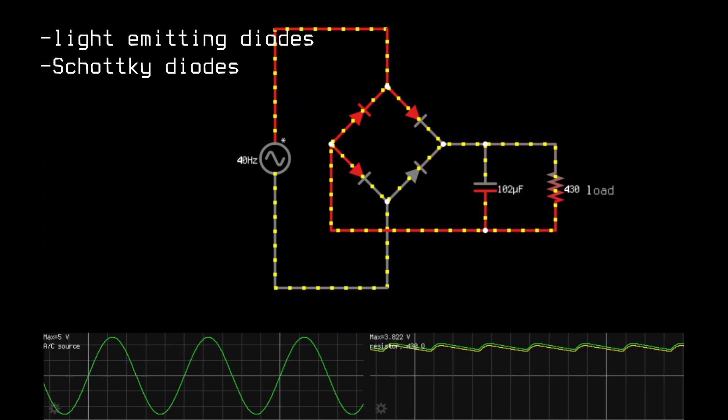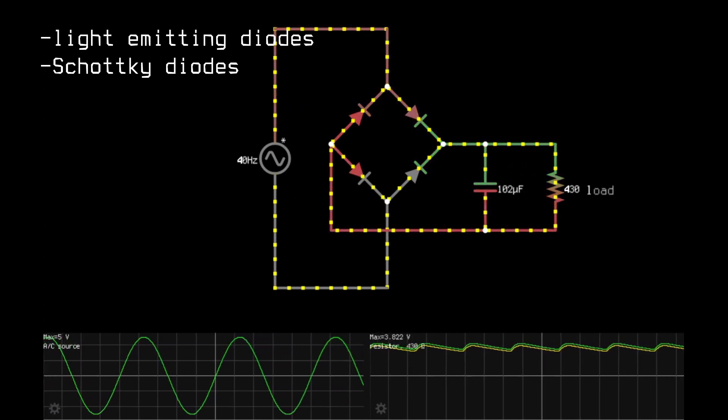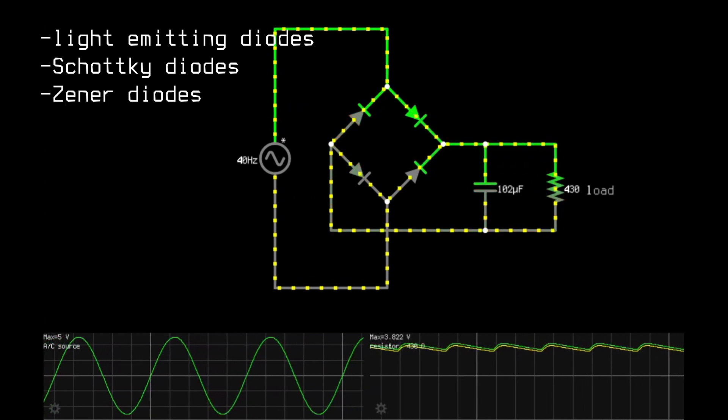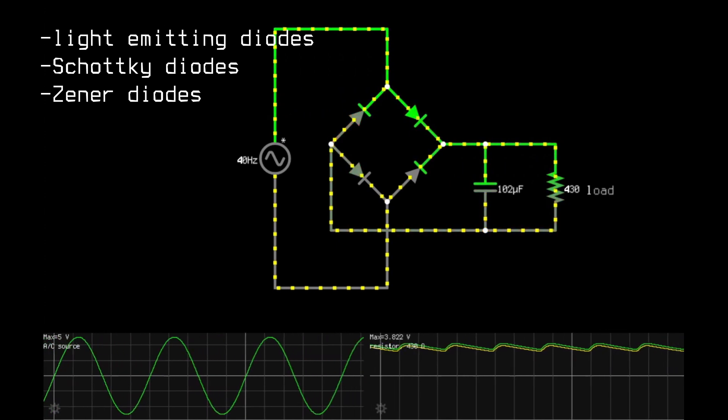Schottky diodes. Special diodes that switch very fast. Zener diodes. They can conduct in both forward and reverse.